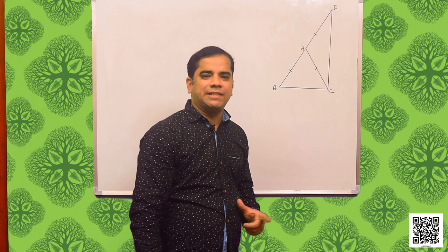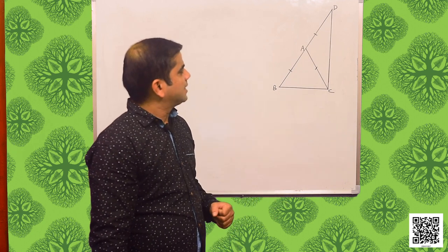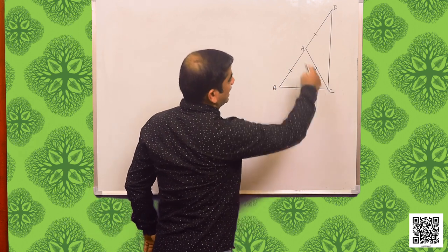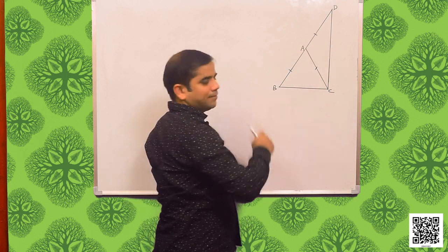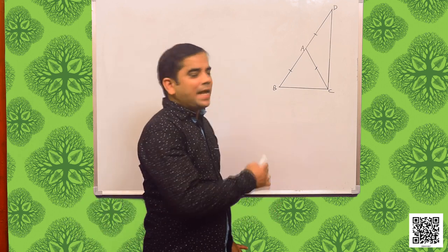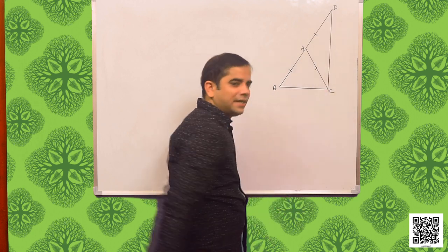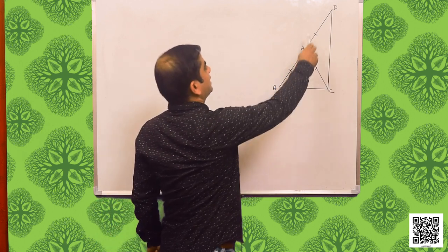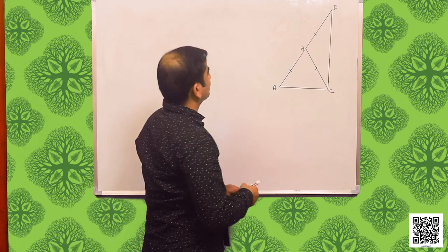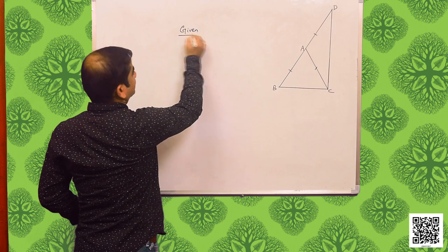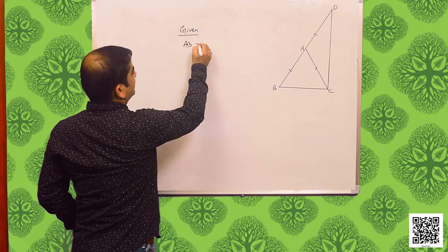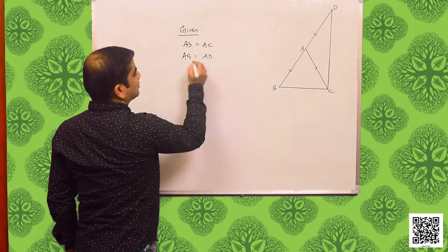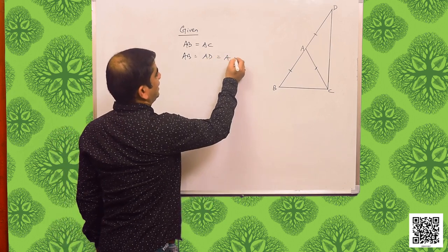I have drawn the diagram as given. There are three triangles: triangle ABC, triangle ACD, and triangle BCD. BA is produced to meet at D such that AD is equal to AB. Given AB is equal to AC and AB is equal to AD, we can write AB is equal to AD is equal to AC.